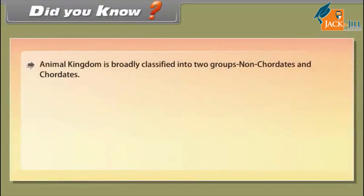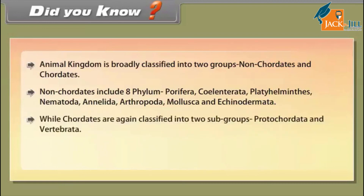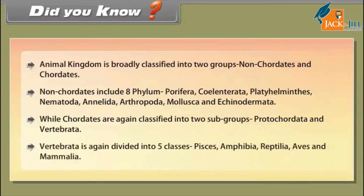Animal kingdom is broadly classified into two groups: non-chordates and chordates. Non-chordates include eight phyla: Porifera, Coelentrata, Platyhelminthes, Nematoda, Annelida, Arthropoda, Mollusca, and Echinodermata. Chordates are again classified into two subgroups: Protochordata and Vertebrata. Vertebrata is further divided into five classes: Pisces, Amphibia, Reptilia, Aves, and Mammalia.